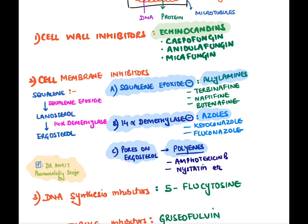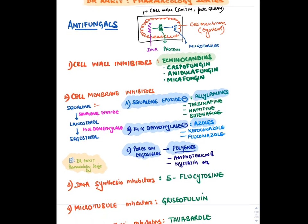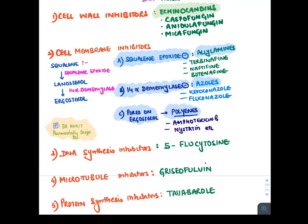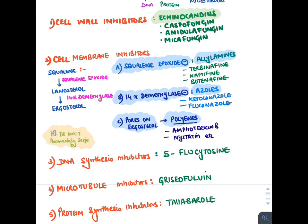Polyenes such as amphotericin B and nystatin create pores on the fully-formed ergosterol cell membrane. DNA synthesis inhibitors include 5-flucytosine, a fake pyrimidine analog ending in 'cytosine'. Microtubule inhibitors include griseofulvin, and there is also a topical protein synthesis inhibitor, tavaborole, approved for onychomycosis.